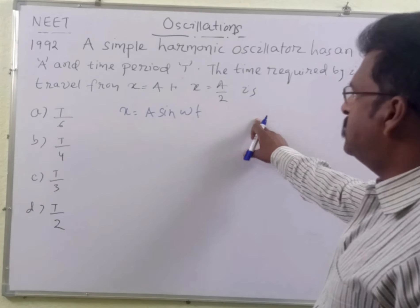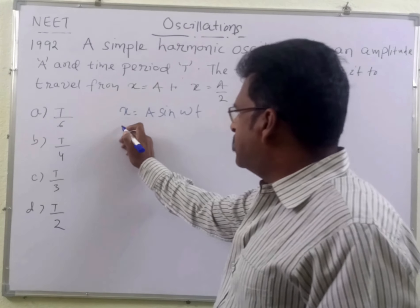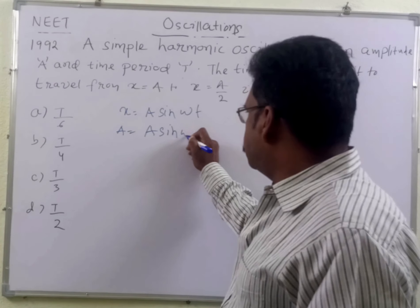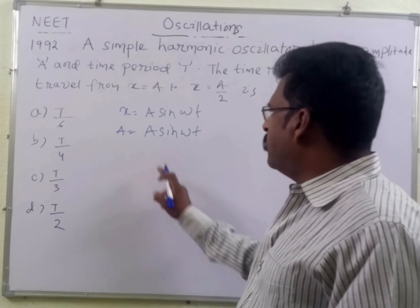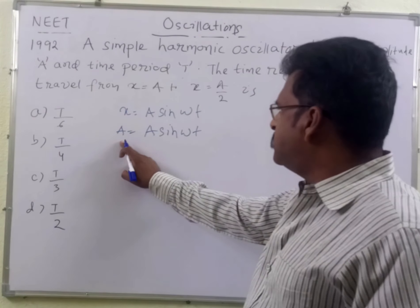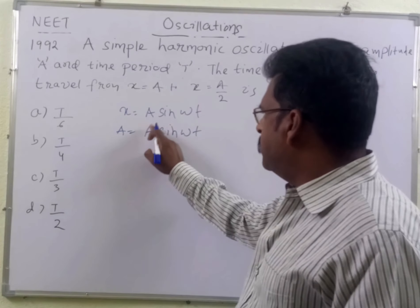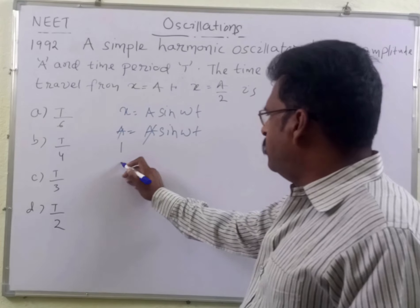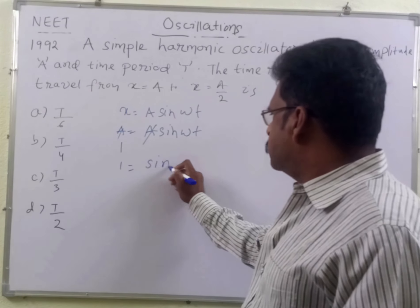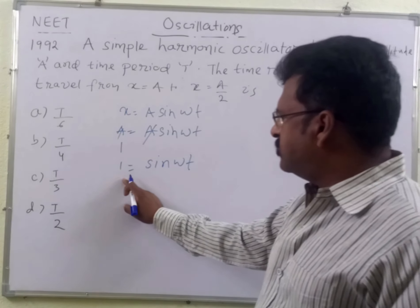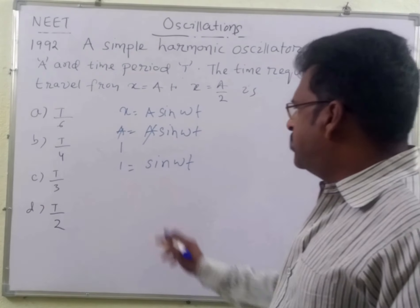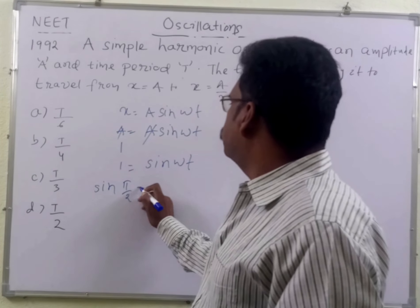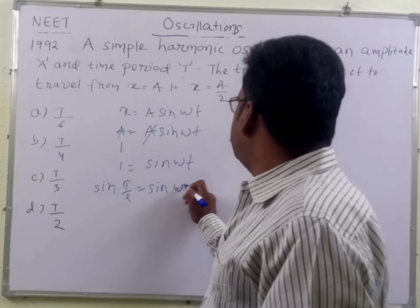The first situation is X is equal to A. That means A is equal to A sin omega T. So A by A cancels, giving us 1 is equal to sin omega T. What is 1, students?